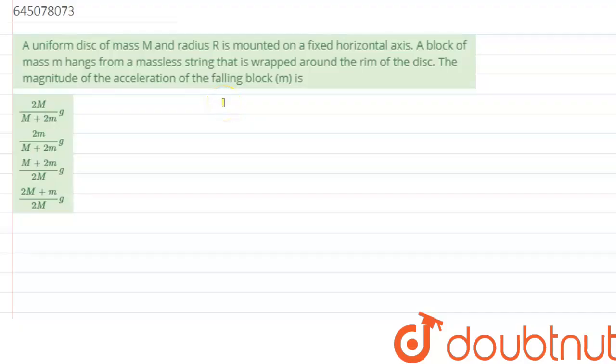Hi everyone, we are given a question which says: a uniform disc of mass M and radius R is mounted on a fixed horizontal axis. A block of mass m hangs from a massless string that is wrapped around the rim of the disc. The magnitude of the acceleration of the falling block of mass m is...